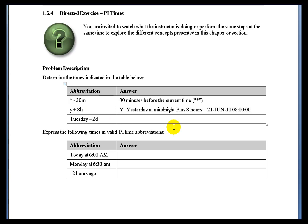And Tuesday minus 2 days: Tuesday by itself is Tuesday at midnight, which is the beginning of Tuesday. So Tuesday minus 2 days would be the beginning of Sunday — Sunday at midnight. We start the 24-hour day at midnight and end it at 23:59:59.